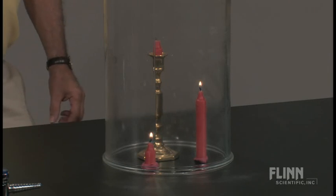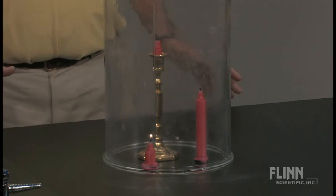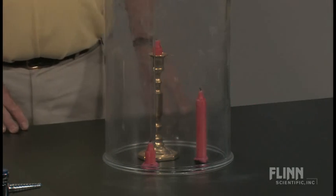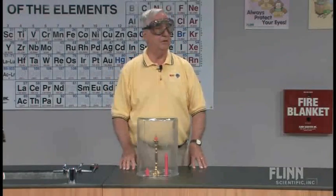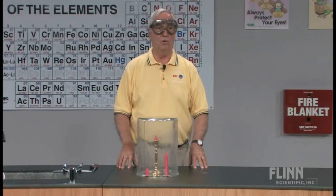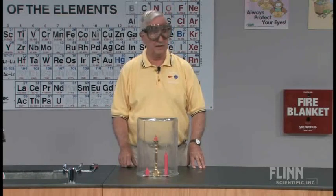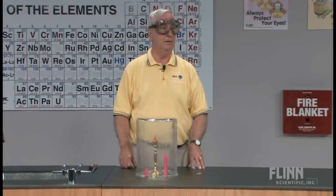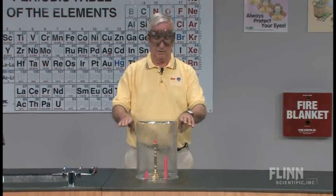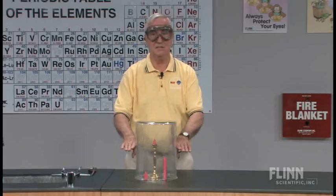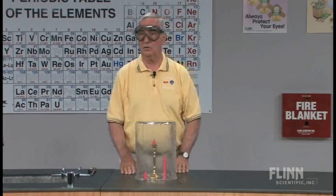This brings us to a very nice discussion of not only the carbon dioxide, but other factors in terms of gases and combustion. What's happening is yes, the carbon dioxide is extinguishing the candles. However, the often overlooked observation is the fact that that carbon dioxide is hot and it rises to the top of the container. So the carbon dioxide builds from the top down because it has less density, and it extinguishes the tallest candle first.